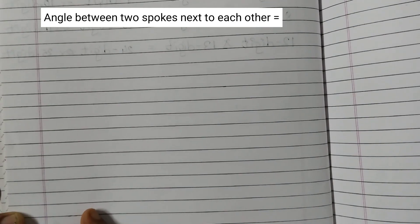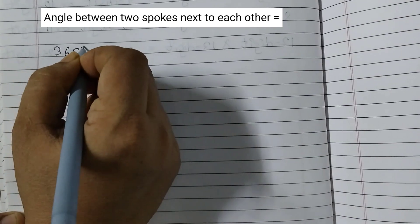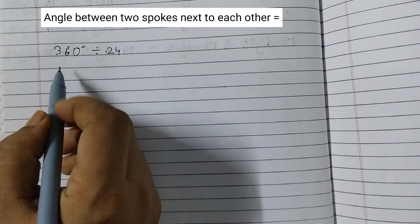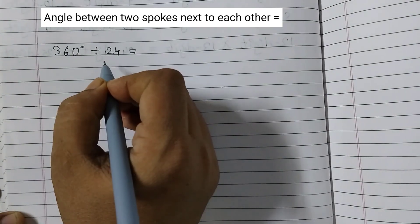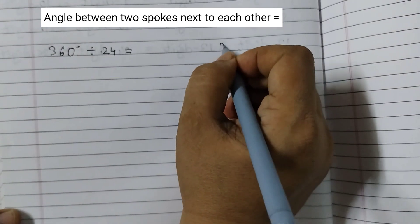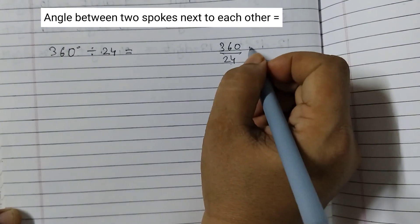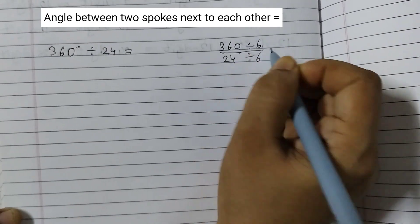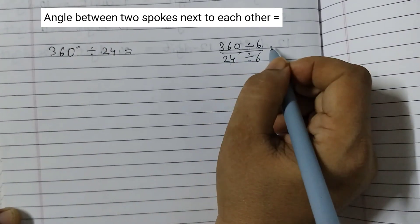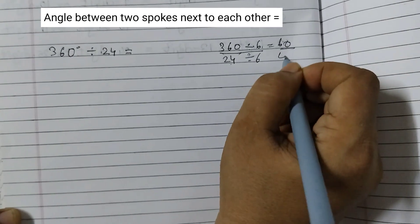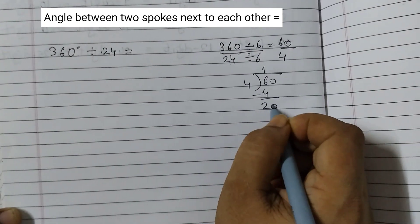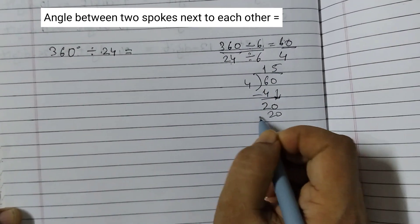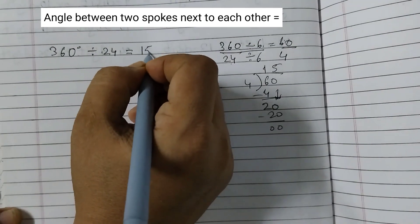So we can say that the angle between two spokes next to each other is equal to 360 degrees divided by 24. This is a complete angle divided into 24 spokes. To simplify, divide both numerator and denominator by 6: 360 divided by 6 is 60, and 24 divided by 6 is 4. Then 60 divided by 4 gives us 15 degrees.